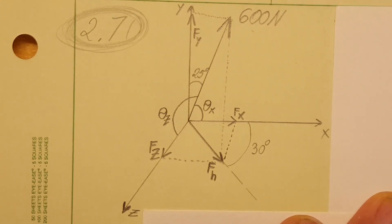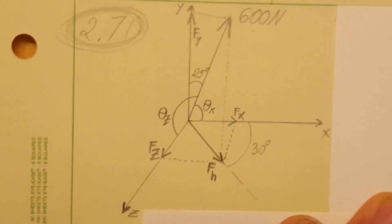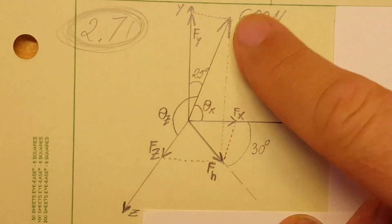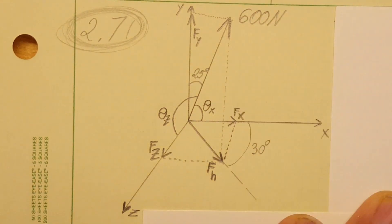Okay, in this problem we're going to be working with 3D vectors. They want us to determine the x, y, and z components of this 600 newton force, and in the second part they want us to find the angles theta x, theta y, and theta z.